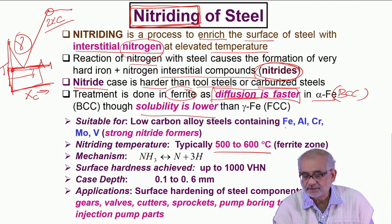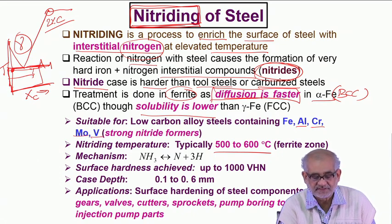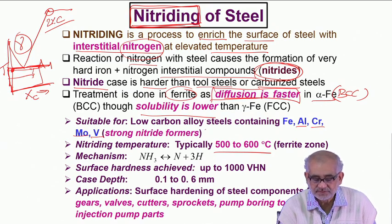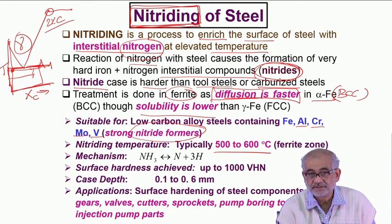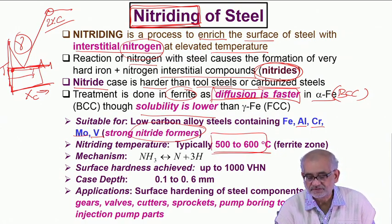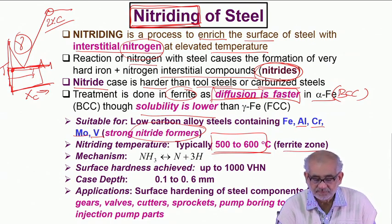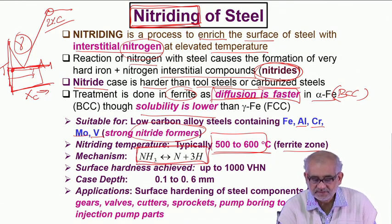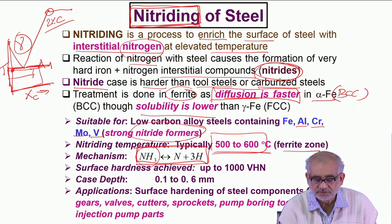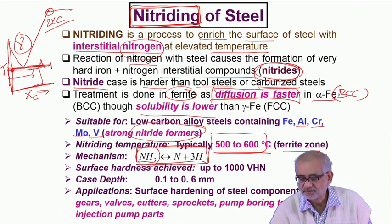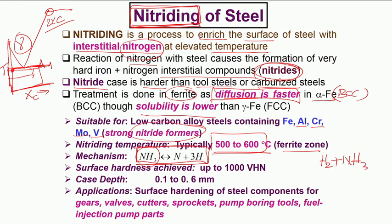If steel contains alloying elements like aluminium, chromium, molybdenum, vanadium, or titanium — these are known to be strong nitride formers. We would prefer to nitride either plain carbon steel or alloy steels containing one of these elements. The temperature is typically about 500 to 550 degrees in the ferritic zone. The most important reaction — the key to nitriding — is the dissociation of ammonia into nascent nitrogen and hydrogen. The nitriding gas mixture always contains hydrogen along with ammonia; typically 80–95 percent by volume of hydrogen.